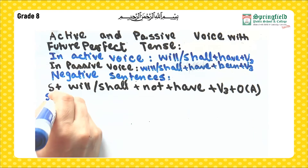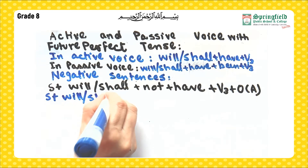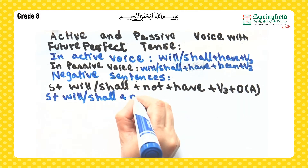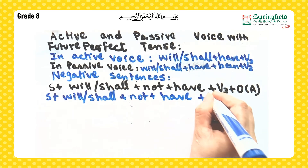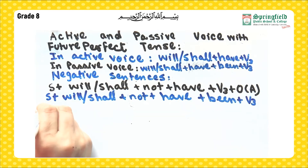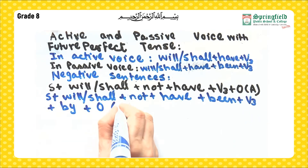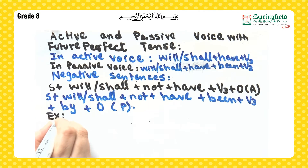For negative sentences in passive voice, the construction is: subject plus will or shall plus not plus have plus been plus verb third form plus by plus object.